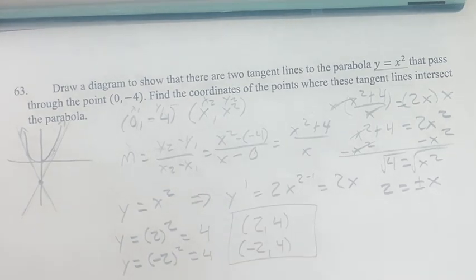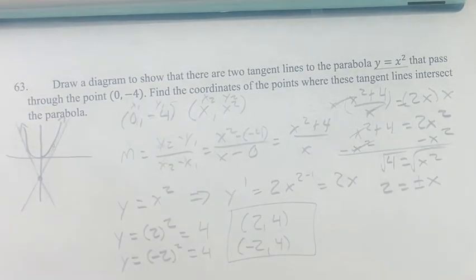These are the two points where the tangent lines that go through the point (0, -4) intersect the parabola. As always, thank you for liking and subscribing, and I'll see you in the next video.